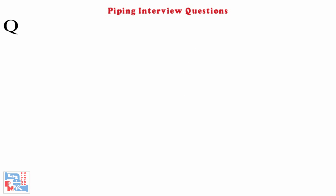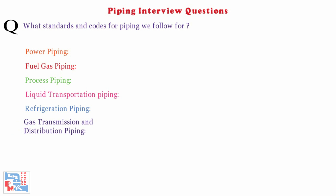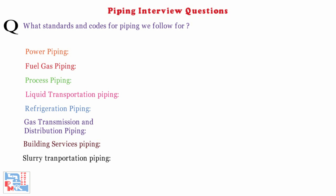First question: what standards and codes do we follow for various types of piping, such as power piping, fuel gas piping, process piping, liquid transportation piping, refrigeration piping, gas transmission and distribution piping, building services piping, and slurry transportation piping?